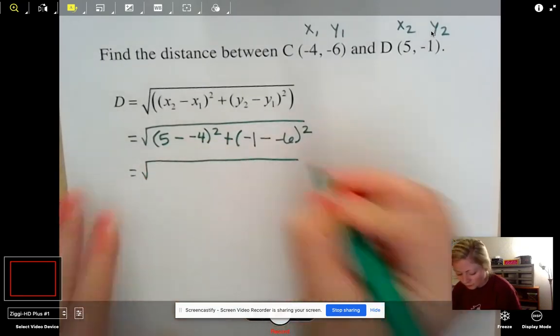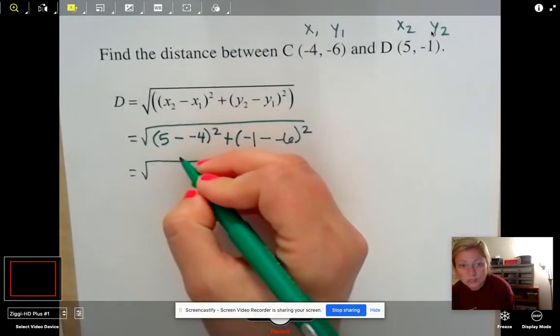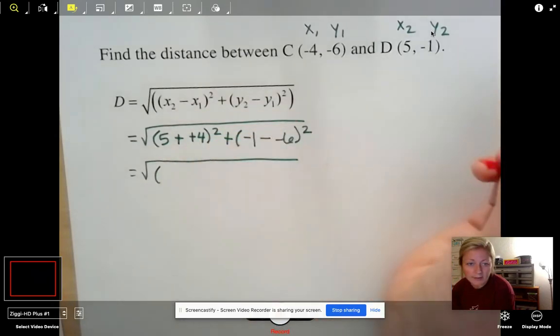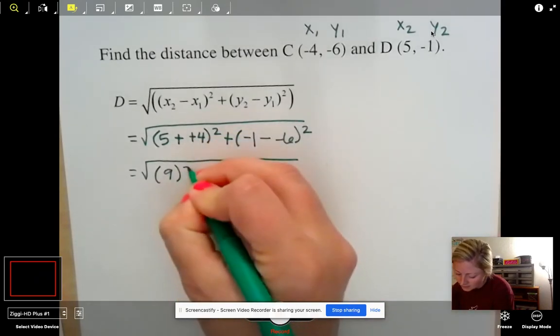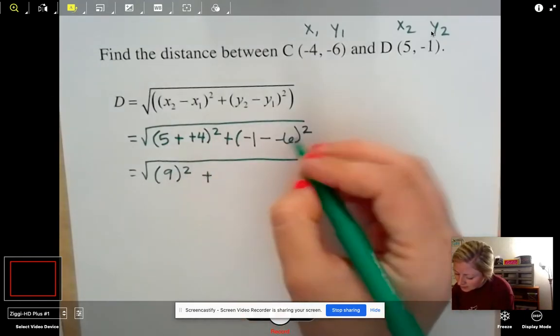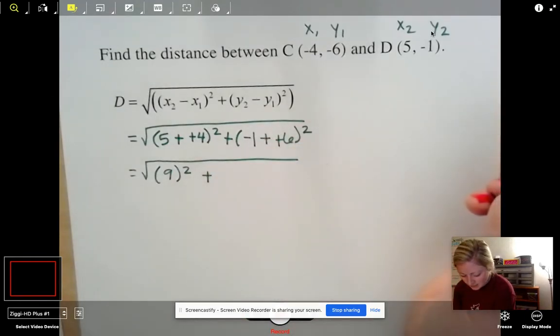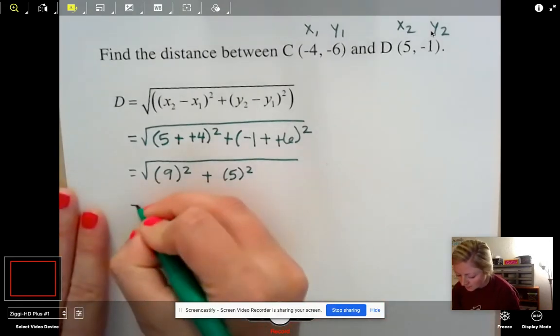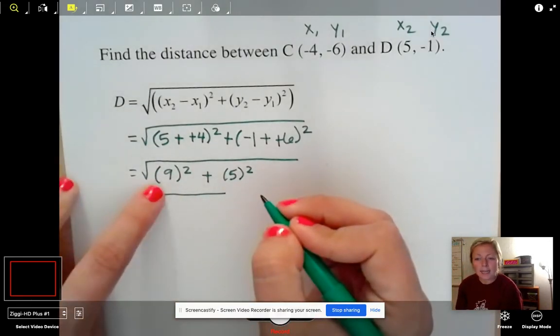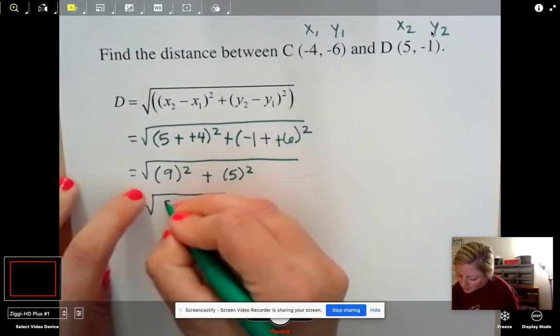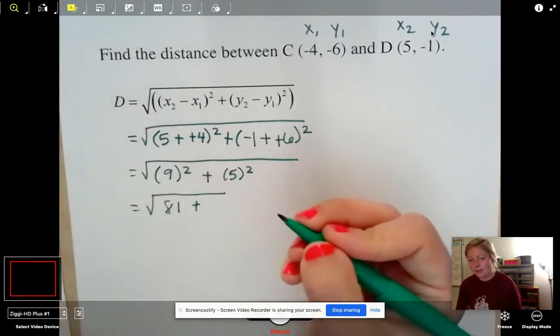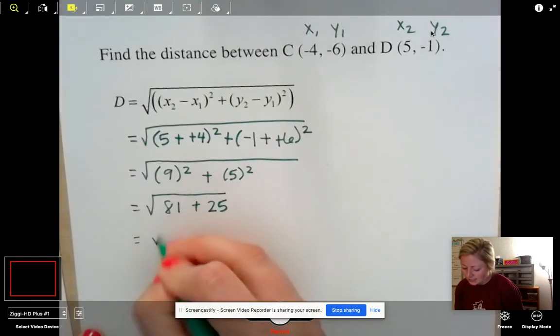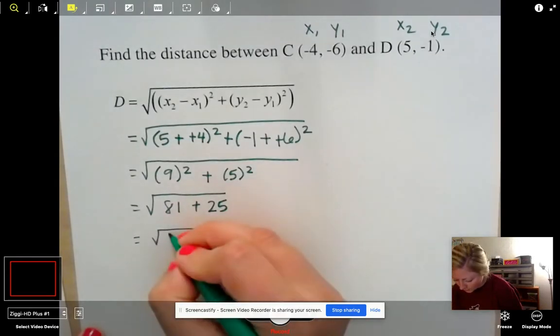And now we just simplify using algebra. So let's drop down our big square root. And now let's do a little simplifying. So 5 minus negative 4. Well, we know that really means to add, right? So I get 5 plus 4 is 9 squared. Plus negative 1 minus negative 6. It's really like adding. So I get 5 squared. We're still simplifying. What's 9 times 9? 81. Good job. 5 squared. 5 times 5 gives us 25. Easy peasy. Now we just add together. 81 plus 25 is 106.